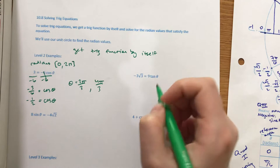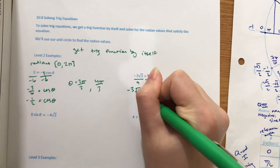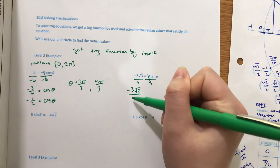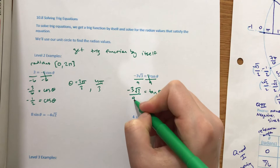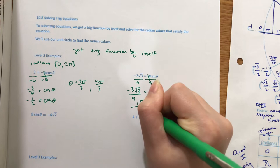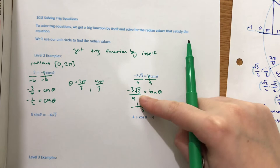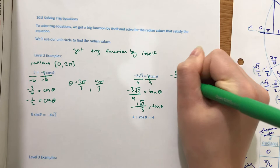Here's tangent. We need to get tangent by itself, so divide by 9. Negative 3 root 3 over 9 — the negative 3 and 9 reduce. So this becomes negative root 3 over 3 because negative 3 over 9 simplifies to negative one-third, and you don't really need the 1. So negative root 3 over 3 equals tangent theta. Now go to your table.